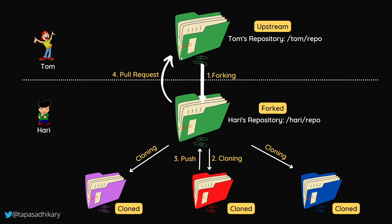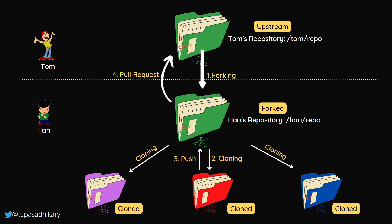You can place yourself in Harry's position. Say you want to contribute to the React.js repo or Angular repo or any open source repo. You fork that repo, clone it to your local disk, create a branch, make your changes, and push to your own repository. If you want that change to go to the main upstream — the actual React or Angular repository — you raise a pull request from your fork to the upstream repo, and the maintainer decides whether to accept it.